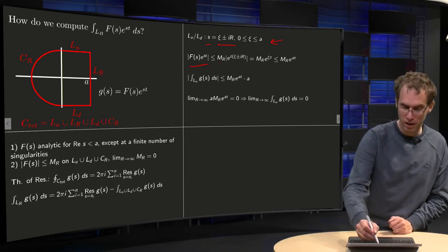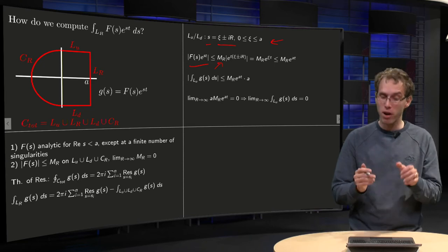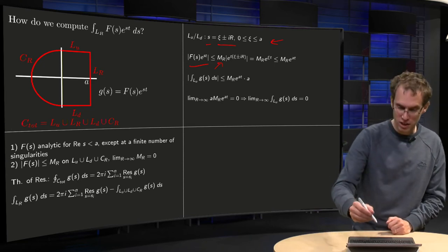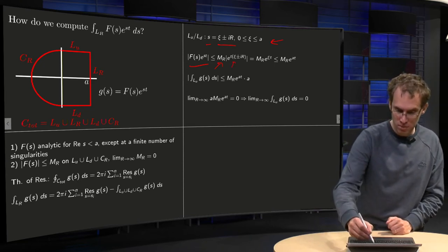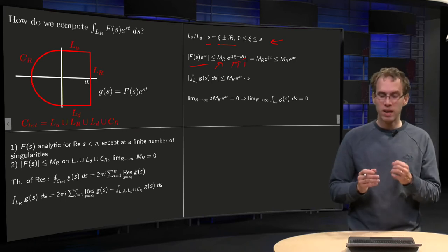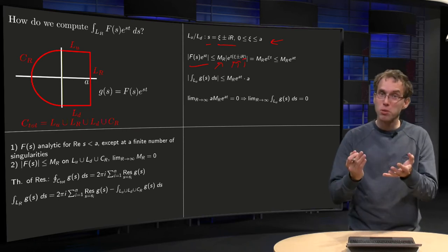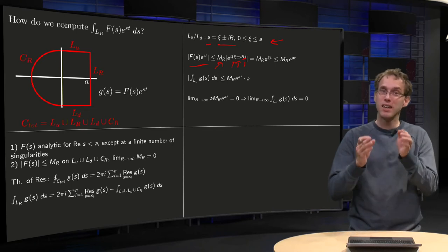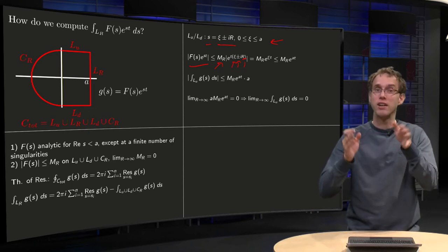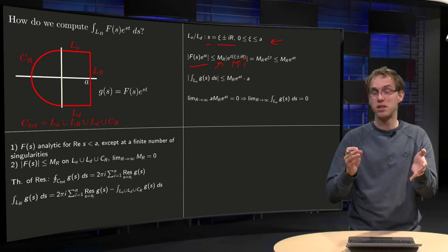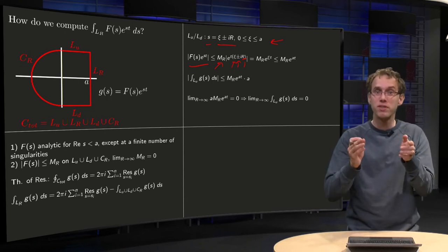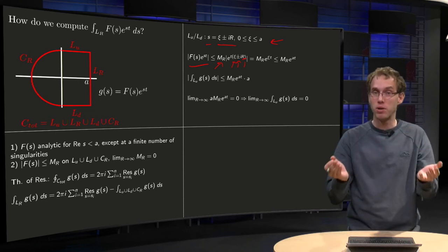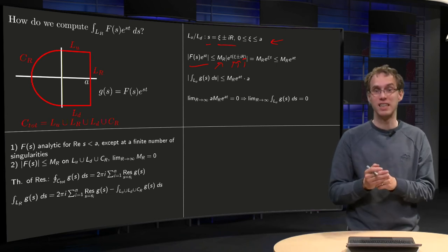Smaller or equal than, well, capital F was bounded by some M_R, and for e^(st) we have t times (ξ ± iR), and now this R is going to blow up, occurs in e^(t·i·R), and the norm of that, the norm of e^(i·t·R) is just 1 for all R, so the R vanishes there.